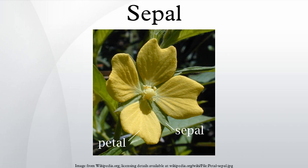Collectively the sepals are called a calyx, the outermost whorl of parts that form a flower. The word calyx is adopted from the Latin calyx, not to be confused with calix, a cup or goblet. Calyx derives from the Greek for a bud, a calyx, a husk or wrapping, from Sanskrit kalika, meaning a bud, while calix derived from the Greek for a cup or goblet, and the words have been used interchangeably in botanical Latin.